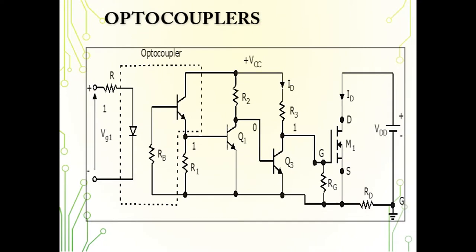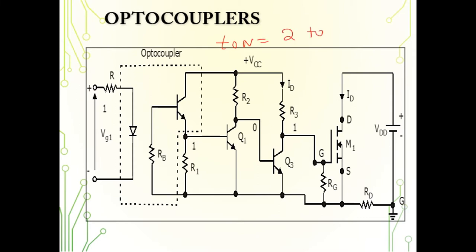Another way of achieving isolation is by using optocouplers, which is the method most commonly used in applications. An optocoupler has an infrared light-emitting diode and a silicon photo transistor. The input signal is applied to the infrared LED, and the output is taken from the photo transistor. The rise and fall times of the photo transistor must be very small — the typical turn-on time is around 2 to 5 microseconds, and the turn-off time is around 300 nanoseconds. These values limit high-frequency applications.